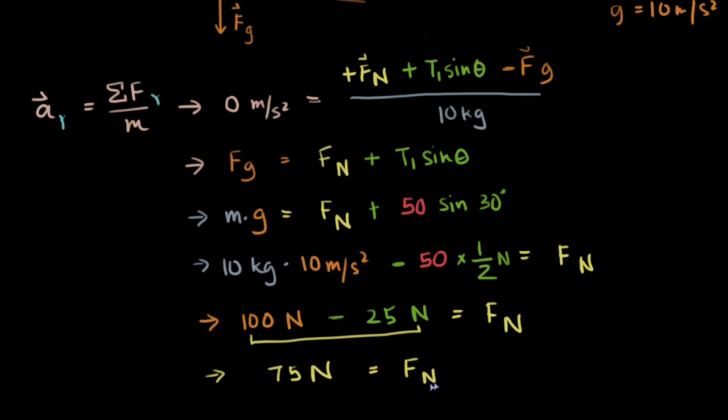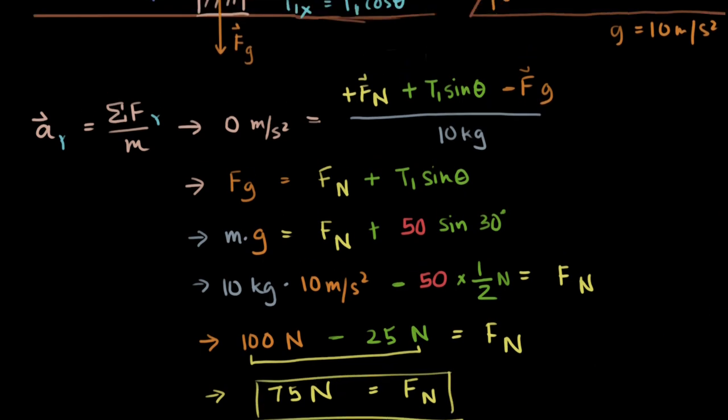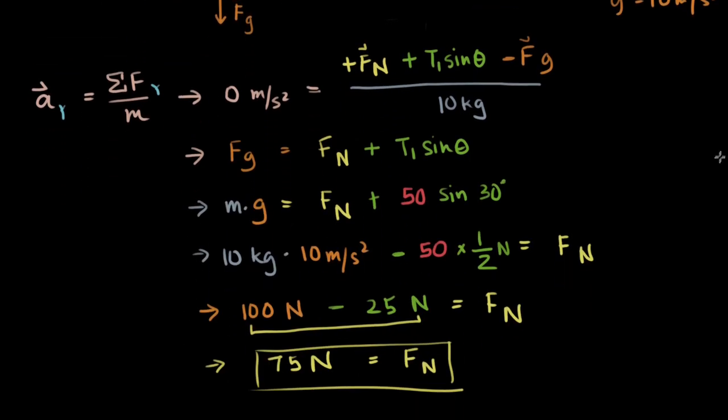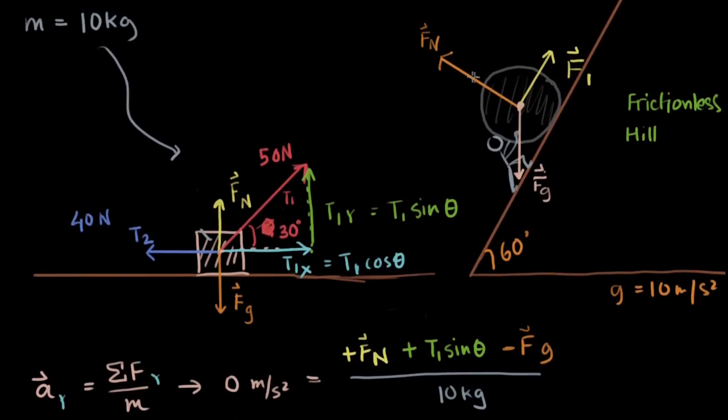We did some physics calculation right here. We found the normal force. What did we do? We used the FBD to find what forces are balancing each other, then we used Newton's second law, the formula, to find the normal force. That's what we are going to do in the first case as well.